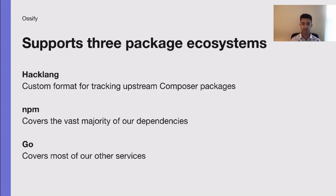Ossify supports three package ecosystems. The first, of course, is Hacklang, because that's our backend and where some of the most dangerous possibilities are. We added custom metadata to track Composer packages upstream, because we had to manually fork and vendor some of these packages to add strong types and other Hacklang features. Second, we added NPM, because NPM is the biggest offender for vast amounts of packages, and we found by far the most findings coming from NPM packages. And finally, we added Go support, because a number of our high-value services, like our caching layer, are written in Go.